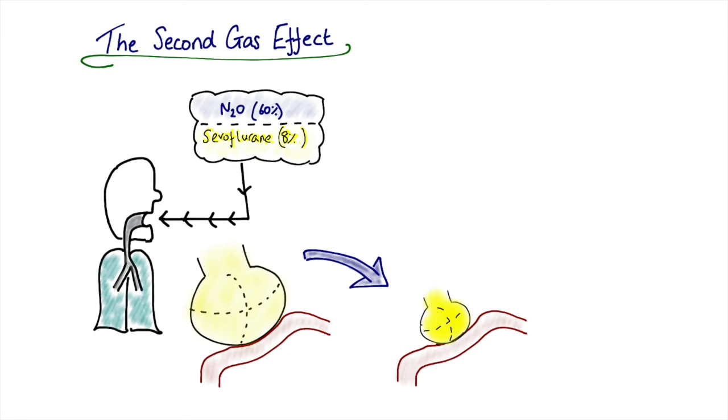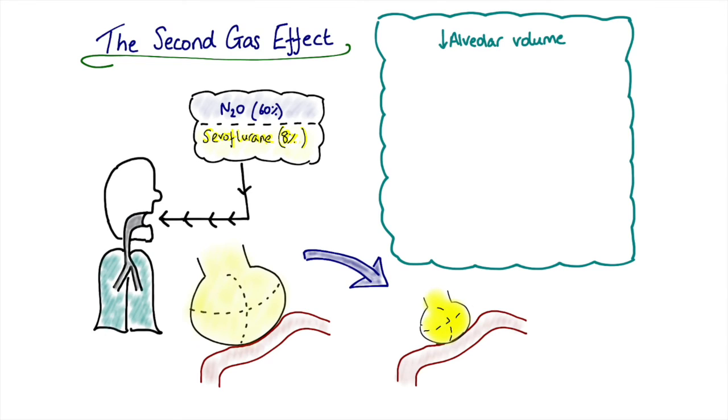Except in this case, we're not just concentrating the other normal gases—nitrogen, oxygen, CO2, etc. We're also concentrating our inhalational anesthetic agent, our second gas, as it were. So we see a reduction in alveolar volume purely as a consequence of the concentration effect. But because of that, we'll see an increase in concentration of the second gas, which in this case is sevoflurane.